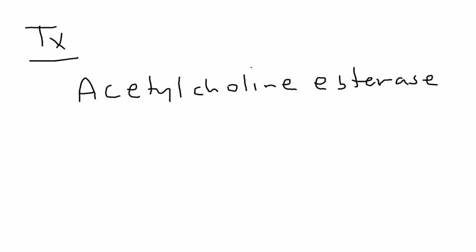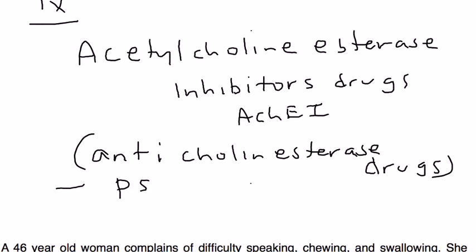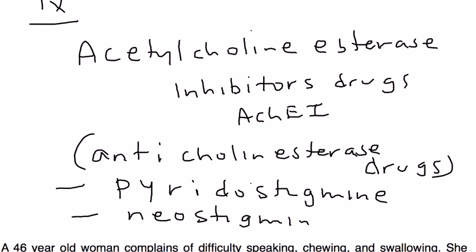So what is the treatment? As I've already mentioned, the treatment are the acetylcholine esterase inhibitor drugs. Sometimes they're also called anticholinesterase drugs. Don't get confused. Spend a little bit of time understanding all this and you won't get confused. I just wanted to mention that they're sometimes given different names. What are some examples? There's a lot actually. There's pyridostigmine. There's another one called neostigmine. So those are the medications that are used to treat it.